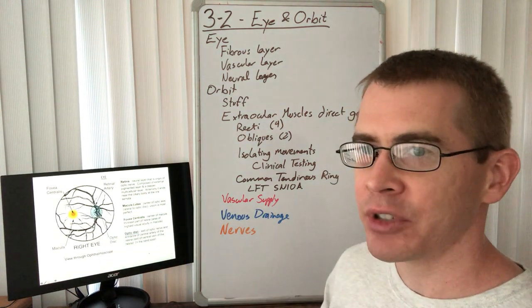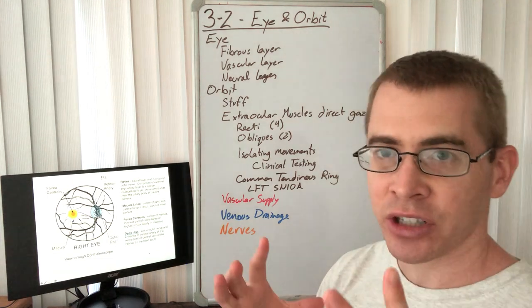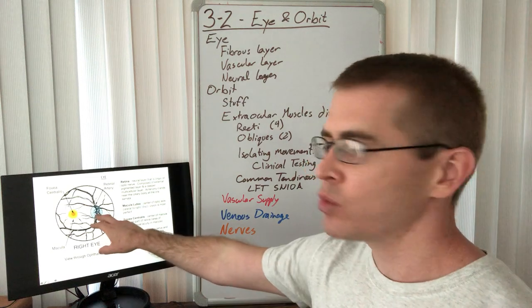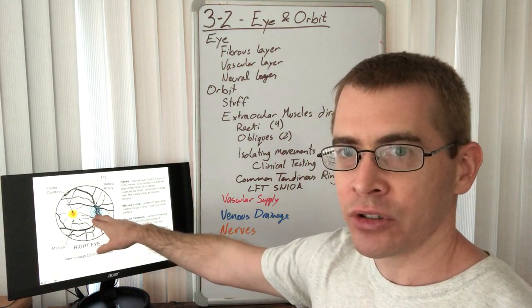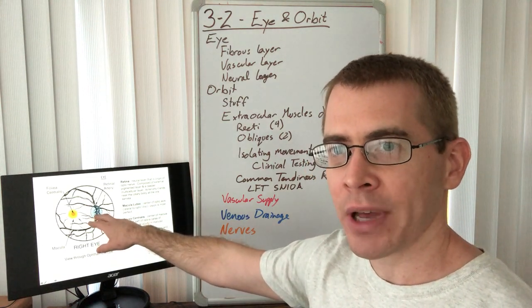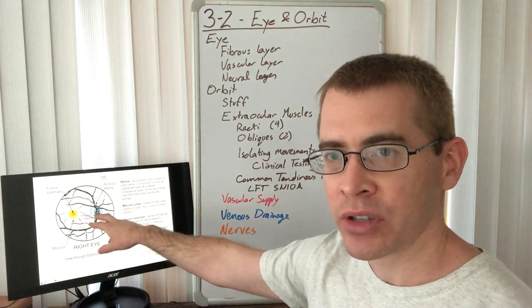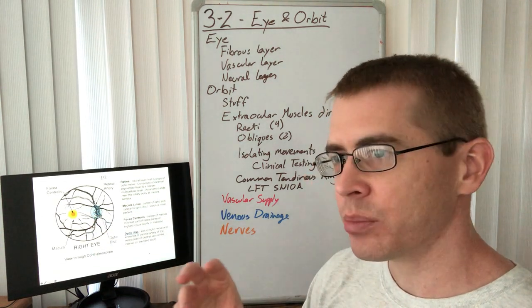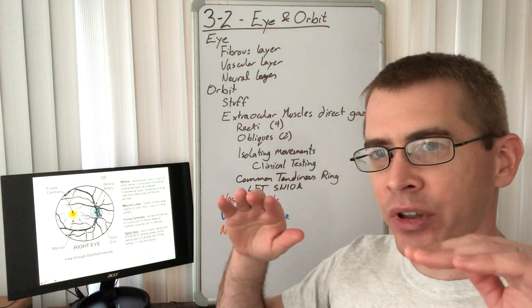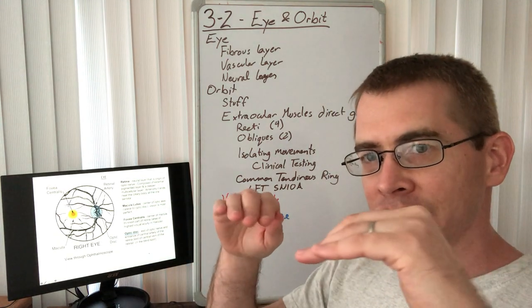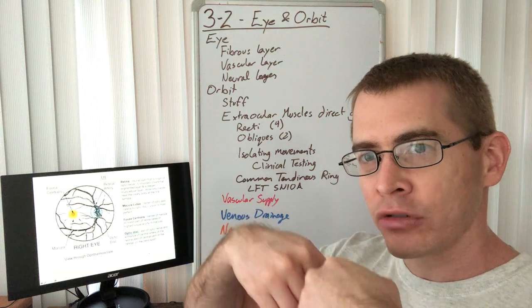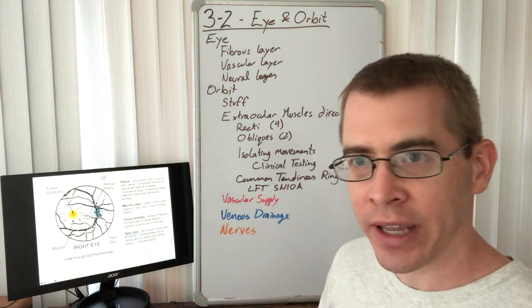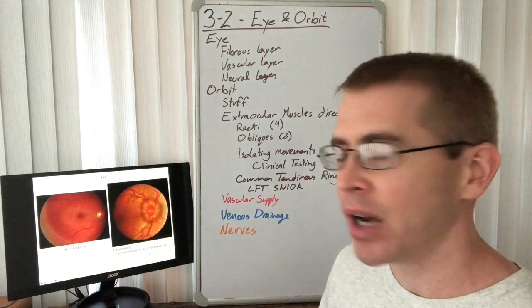The optic disc is our blind spot because this is where rods and cones do not exist — it is a hole in the back of the eye where arteries enter. It is also where all the central processes of the ganglion cells converge and exit the posterior portion of the eye, which is why we cannot see anything in that blind spot.